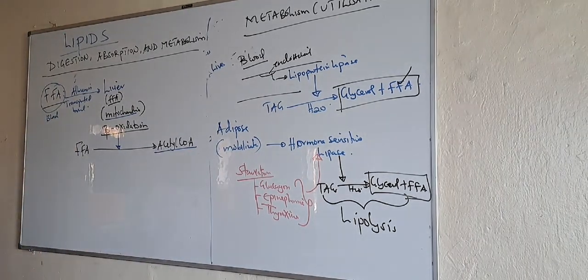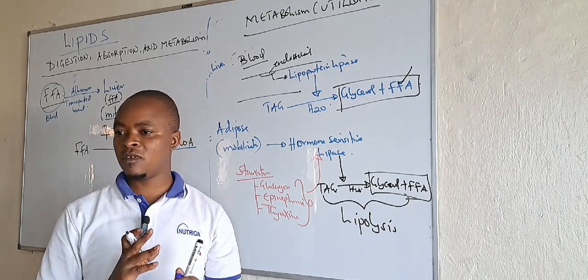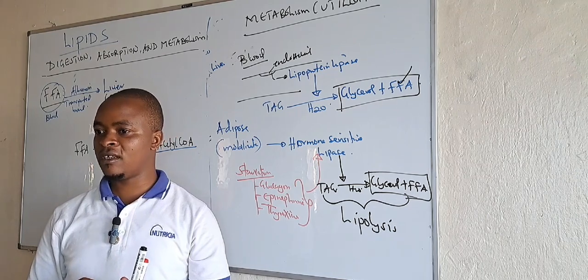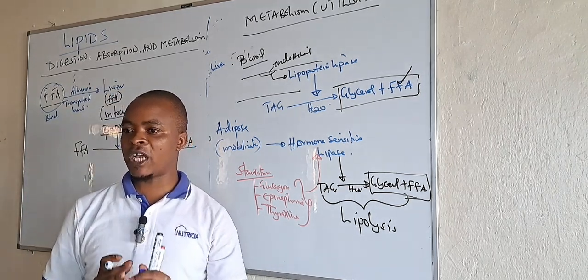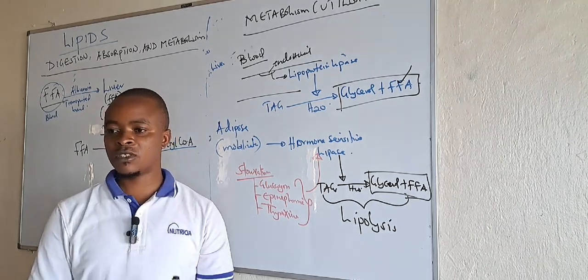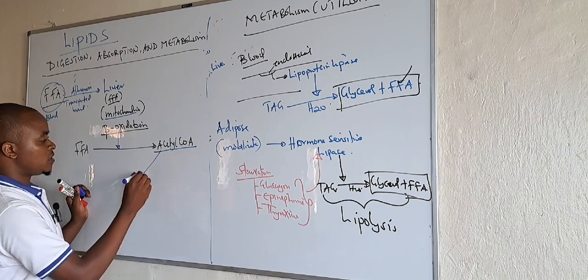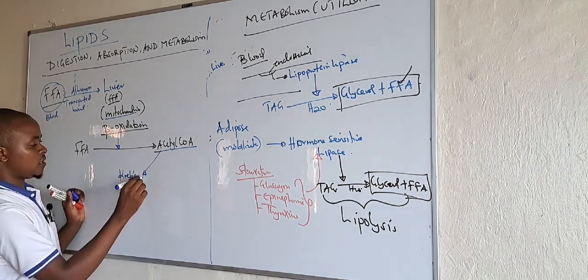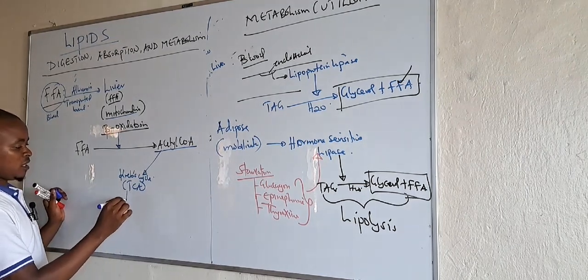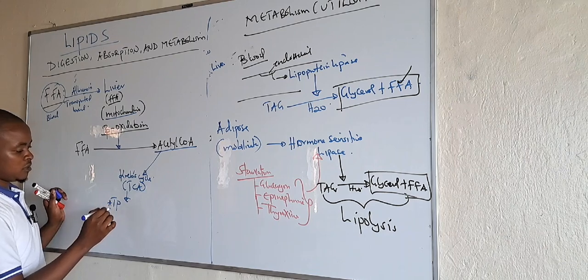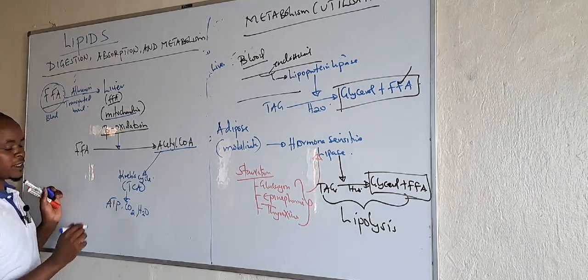This acetyl-CoA is the intermediate of all biochemical reactions. When you have acetyl-CoA, you can convert it into energy via the Krebs cycle and electron transport chain, or use acetyl-CoA for lipogenesis, for ketogenesis, or even for cholesterol synthesis. In the case where our body is in starvation and needs energy, this acetyl-CoA is taken into the Krebs cycle — also called the tricarboxylic acid cycle — and it is used to provide energy in the form of ATP, carbon dioxide, and water. This is the first utilization of fats.